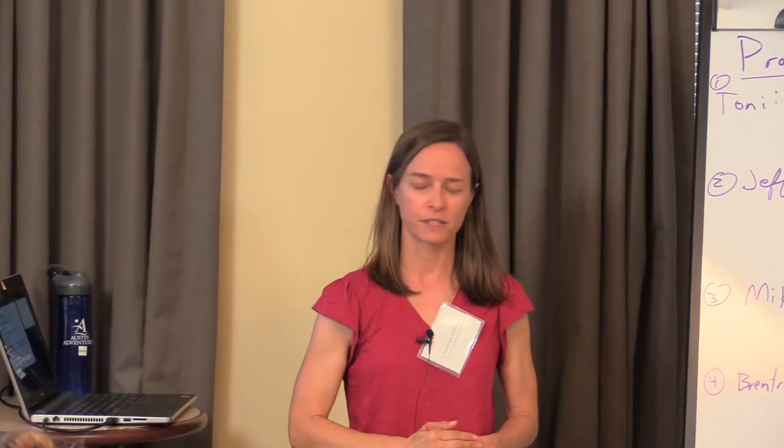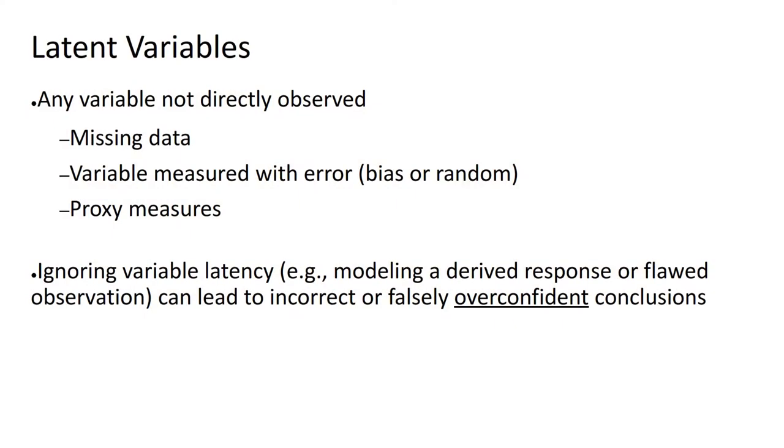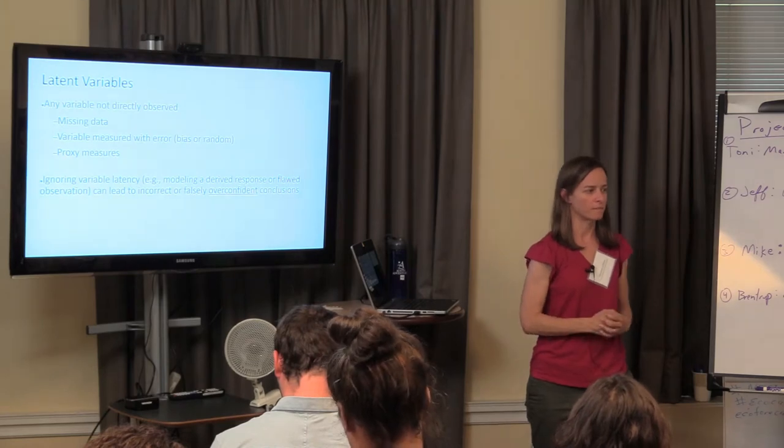Now we're going to move into latent variables - anything that's not directly observed. Sometimes that's errors, sometimes that's variables measured with error, whether that error is biased (meaning you've got an instrument that's always a little bit high) or it's actually got random error as assumed generally with measurement error, and you want to account for that explicitly.